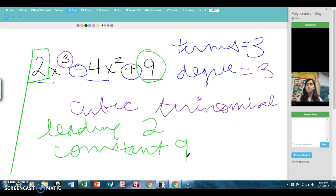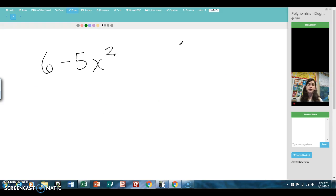Let's take a look at another example problem. First, I want you to notice that this is not written in what we call standard form, meaning that the biggest term is not first, the biggest degree. So we're going to rearrange the term so that it says negative 5x squared plus 6. It's important to write the terms in descending order so that you can correctly identify the leading coefficient.